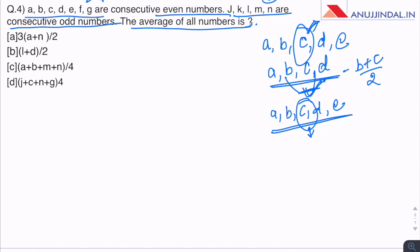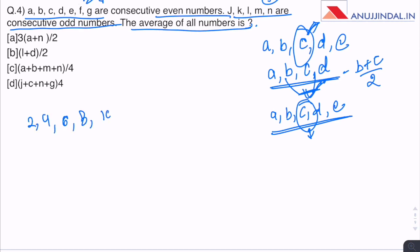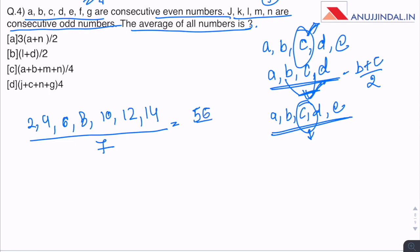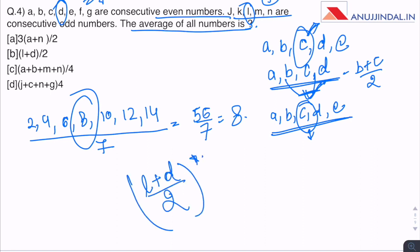In the question, it is given that A, B, C, D, E, F and G are consecutive even numbers. Let's assume 2, 4, 6, 8, 10, 12 and 14. These are 7 consecutive even numbers. Divide them by 7, comes out to be 56 divided by 7, which is 8, which is the middle term. So here we know that D is the central number in this and L is the central number in this. So the average is going to be L plus D by 2.